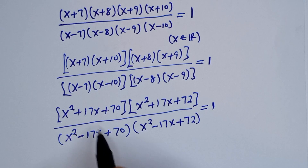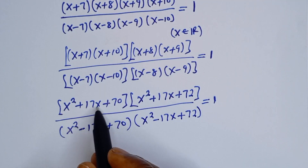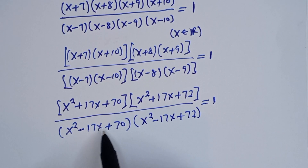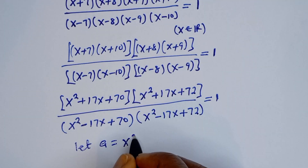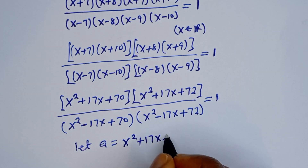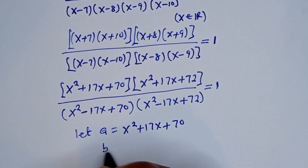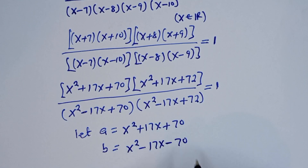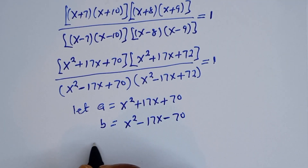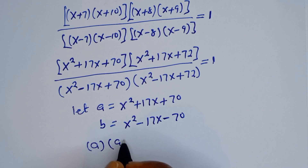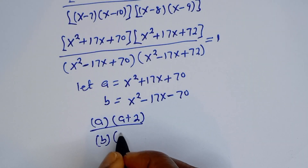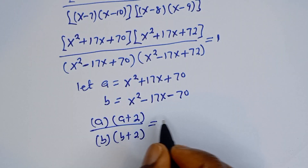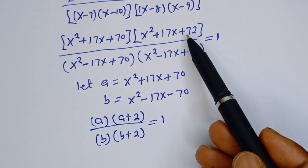Everything is equal to 1. Now we can see that the expressions share common structure, so let A equal S squared plus 17S plus 70 and B equal S squared minus 17S plus 70. Substituting, we have A bracket A plus 2, divided by B bracket B plus 2, is equal to 1, because 70 plus 2 is 72.